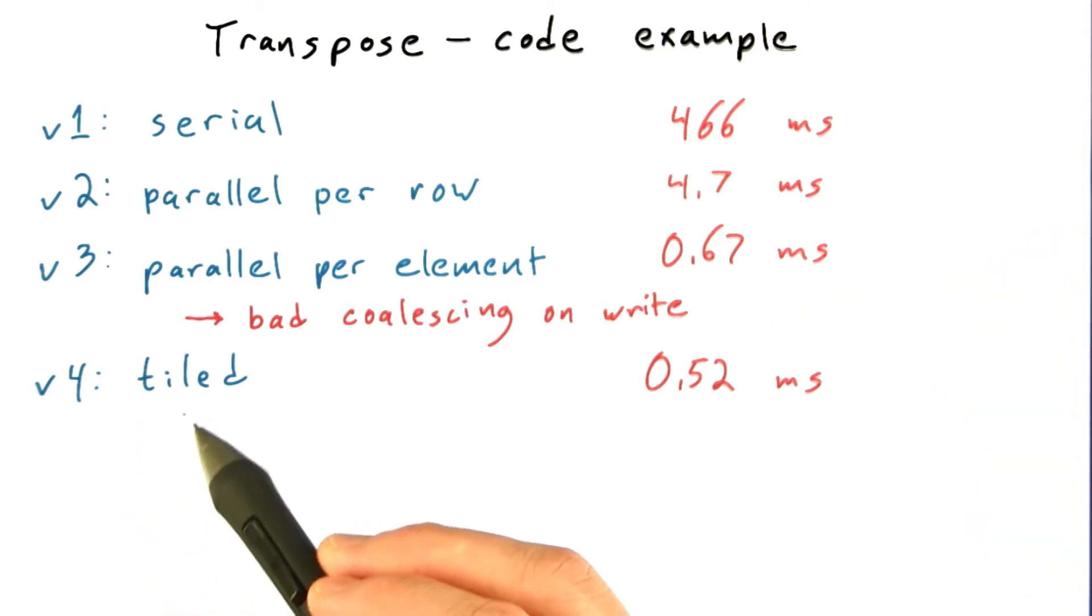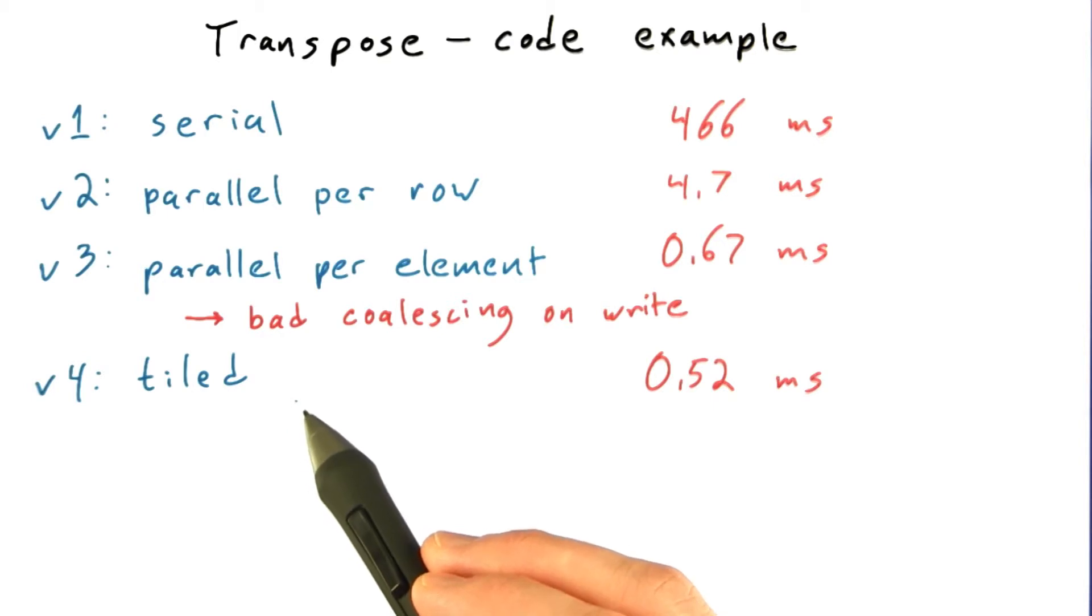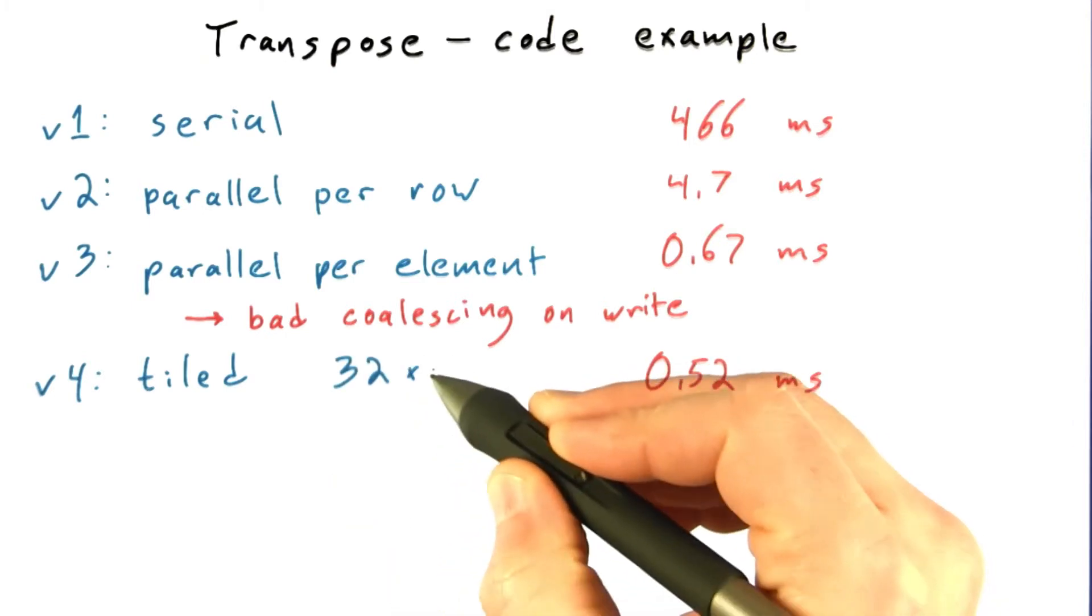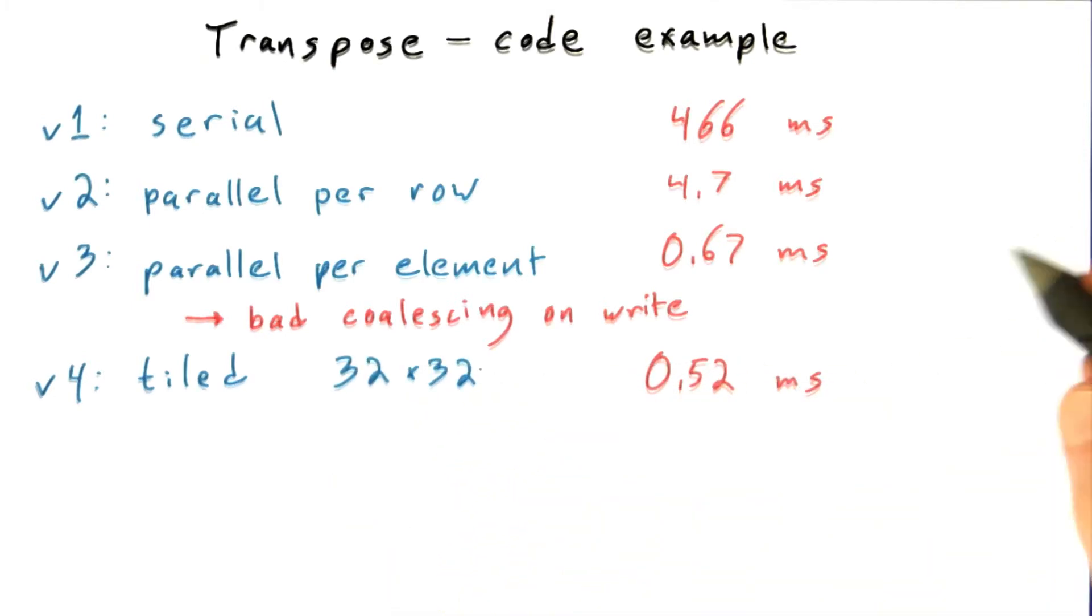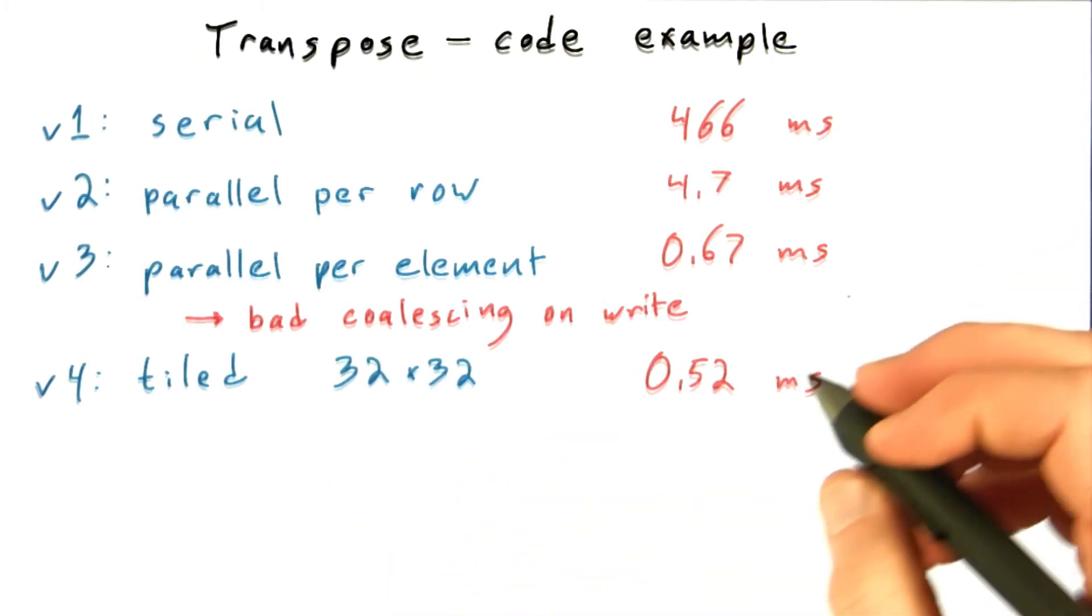To fix that, we came up with a tiled version of our code, where each thread block is responsible for reading a tile of the input matrix, transposing it, and writing that transposed matrix to its location in the output matrix, and it can perform these reads and writes in a coalesced fashion. We did this in blocks of 32 by 32 tiles and got excellent coalescing.